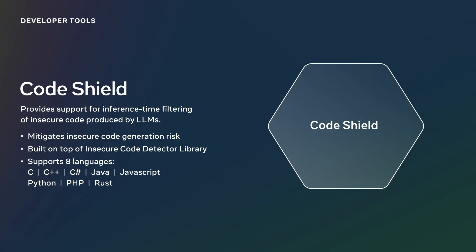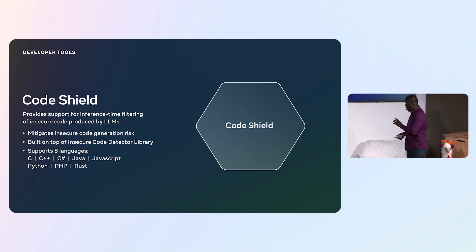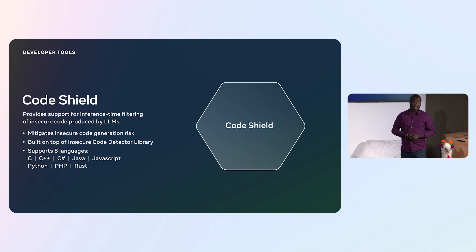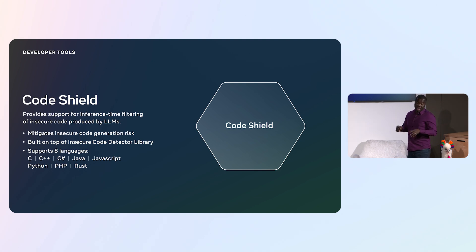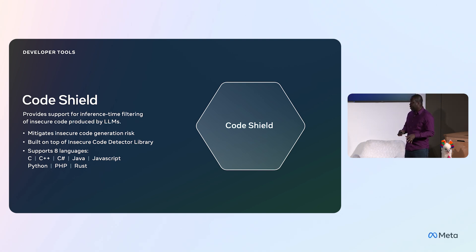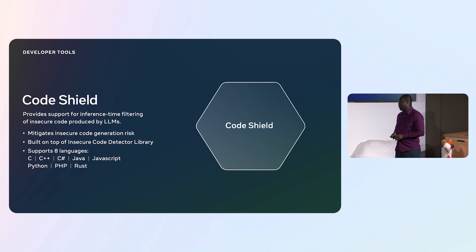The last tool I want to mention is Code Shield. Code Shield provides support for inference-time filtering of insecure code generated by the LLM itself. It is built on top of an insecure code detection library which supports about eight languages. For coding use cases, this is a must-have. This insecure code library leverages things like regex and rule-based checks to ensure that the code generated is relatively safe for consumption.